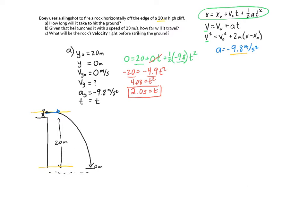So that was part A. Part A is done. Not too bad. Just looking at the vertical pieces. Now, in part B, it now says, given that he launched it with the speed of 23 meters a second, how far will it travel? All right. Well, let's see if we can write down our information. So we've got our initial position, our final position, our velocity, initial velocity in the x direction, our final velocity in the x direction, our acceleration in the x direction, and of course, time.